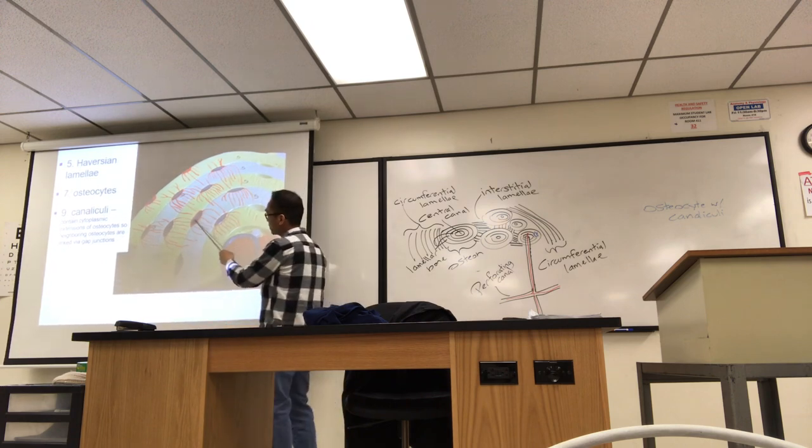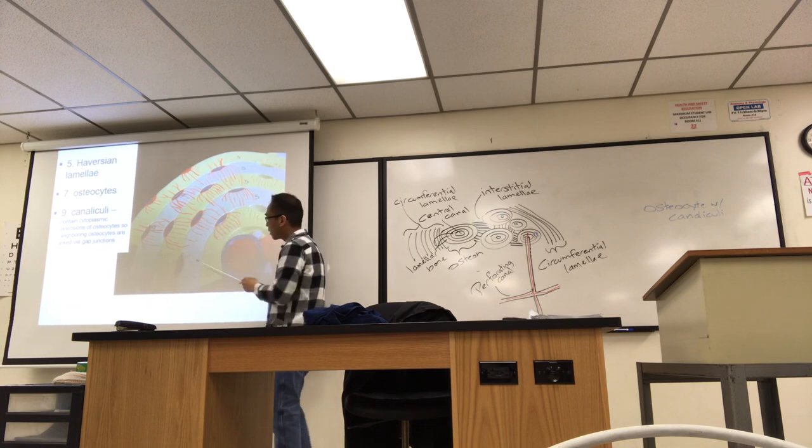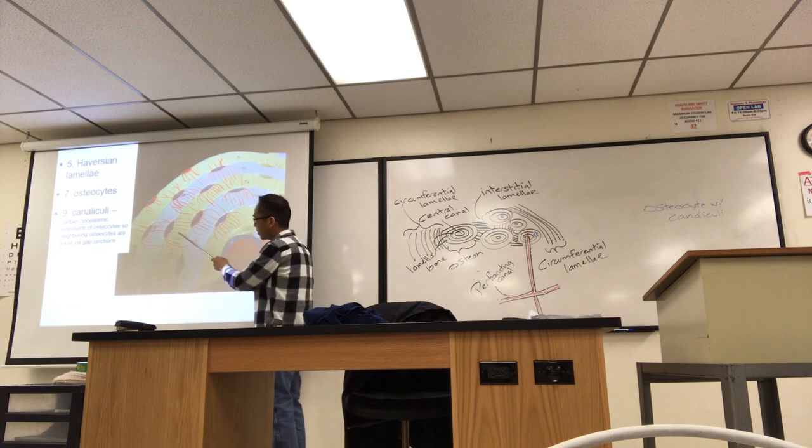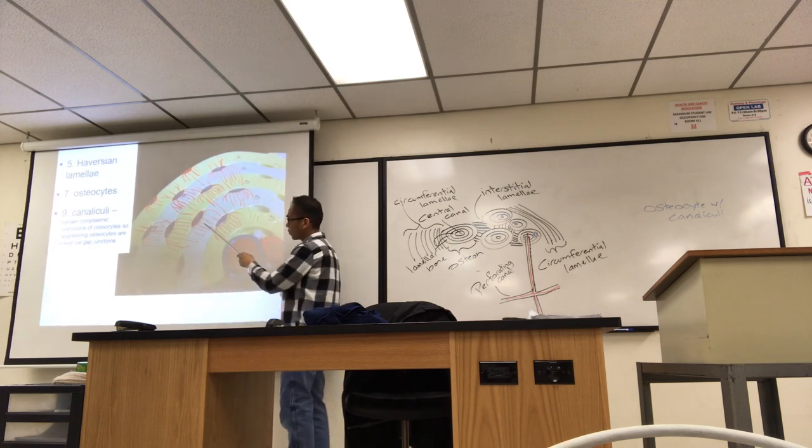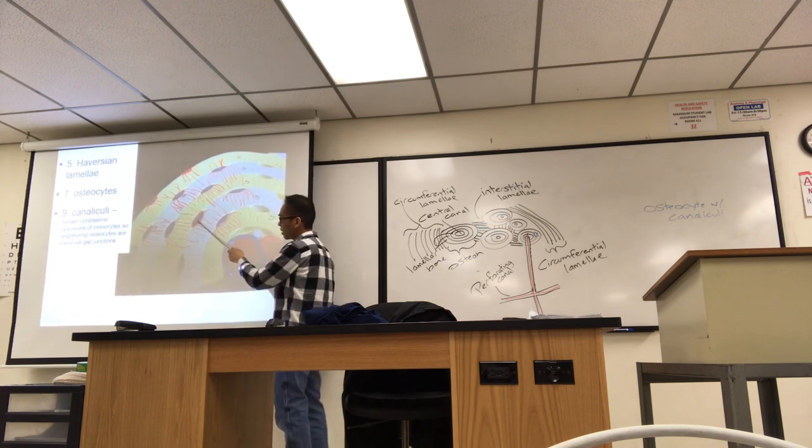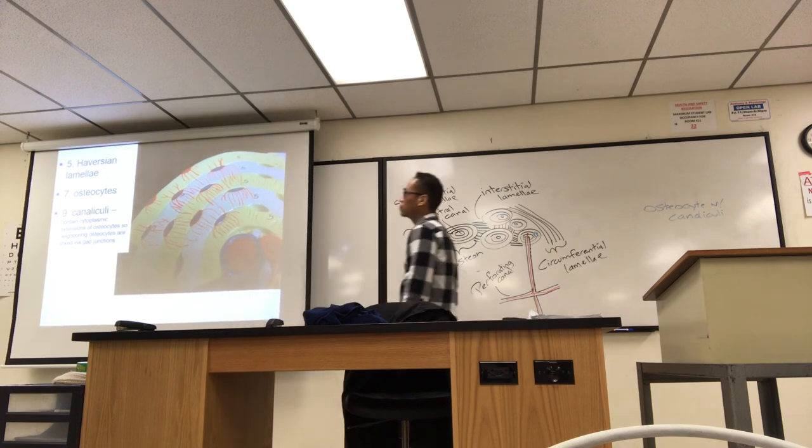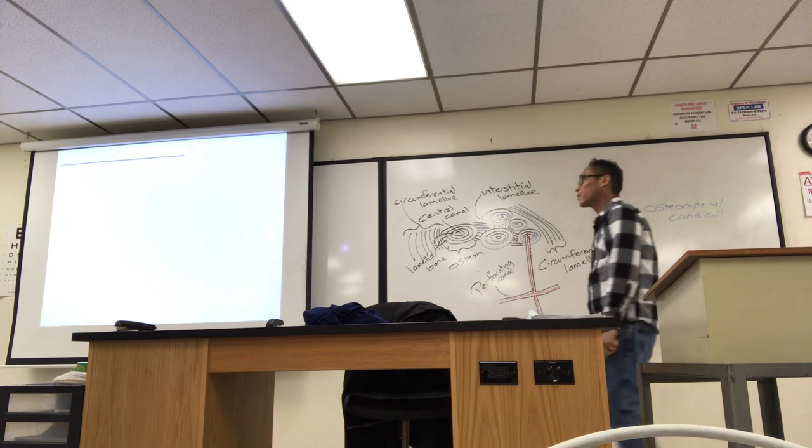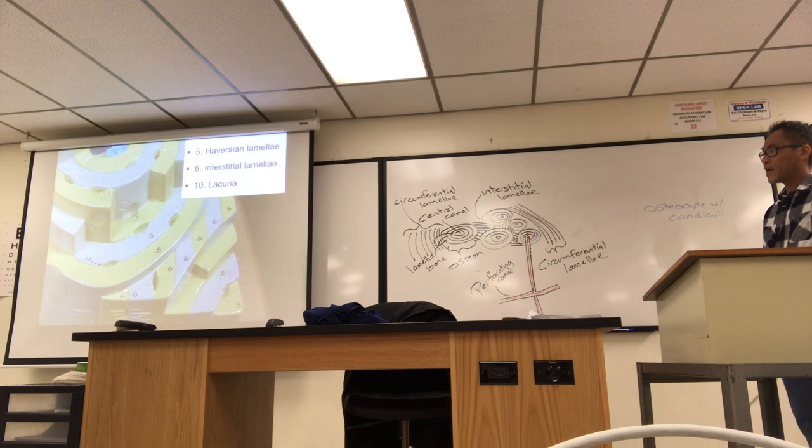So these are the osteocytes. They color them blue. But they color the canaliculi red to symbolize that they're receiving blood from the artery and it's like seeping through the cracks. But really those are extensions of the cell.